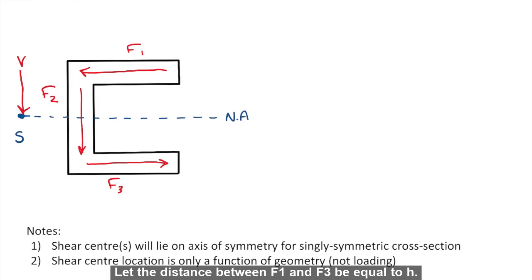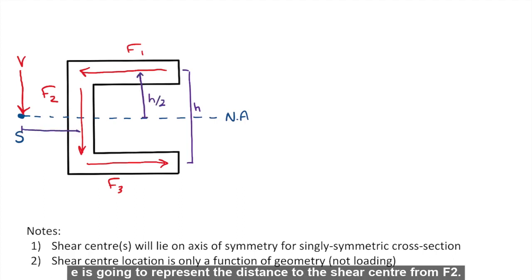Let the distance between F1 and F3 be equal to h. So that means from the neutral axis to F1, the distance will be h over 2. e is going to represent the distance to the shear center from F2.